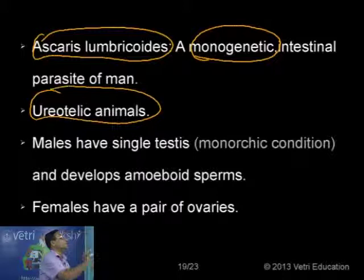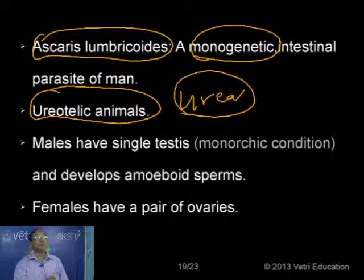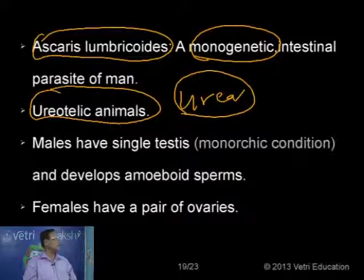One important examination question: what is the nature of the excretory product in Ascaris? It is urea. The waste product excreted by roundworms is urea. Based on the nature of waste product eliminated, animals are classified into ureotelic, ammonotelic, and uricotelic animals. Since the waste product of roundworms is urea, the animal is called ureotelic.